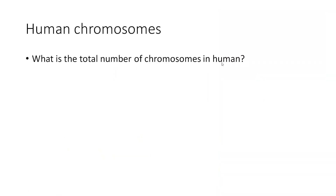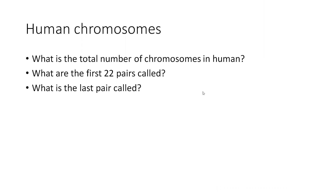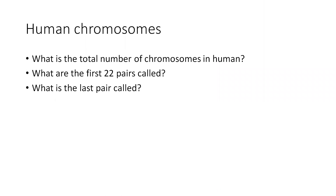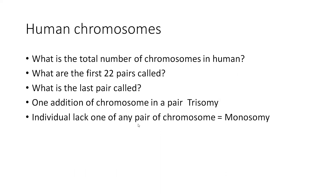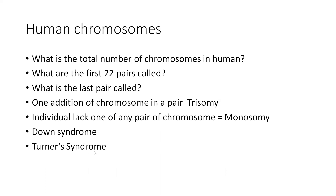Human chromosomes: the total number is 23 pairs. The first 22 pairs are called autosomes. The last pair is called the sex chromosome or allosome. One addition of a chromosome in a pair is called trisomy — chromosome pair means two chromosomes plus one, making trisomy. If an individual lacks one chromosome of any pair, it is called monosomy — one less in the pair, so two minus one gives one. Down syndrome is an example of trisomy, and Turner syndrome is an example of monosomy because they have only one X chromosome.